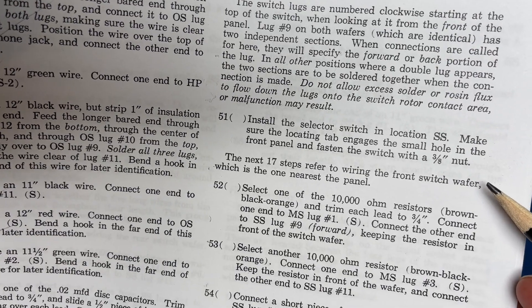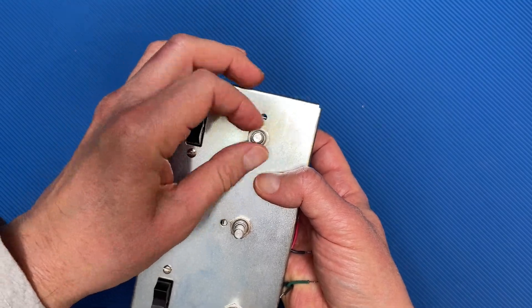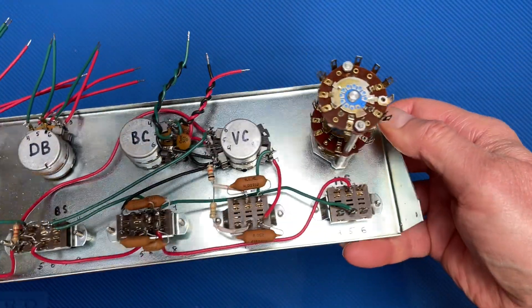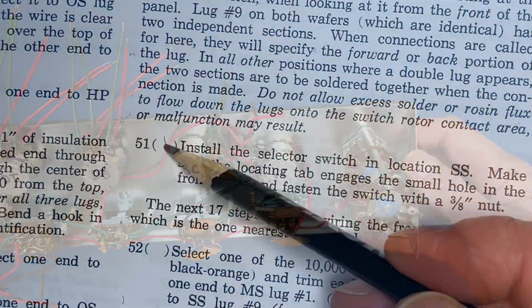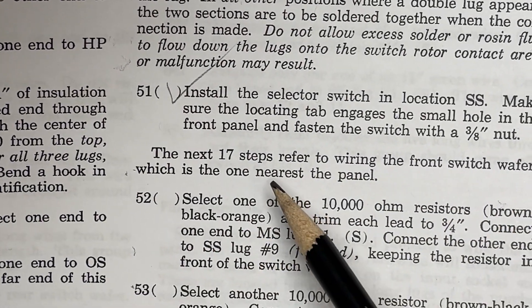Okay, step 51: install the selector switch. Here it is, and there it goes. Looks good. Step 51, done. Steps 52 through 85 have us wire the selector switch. Let's do it.